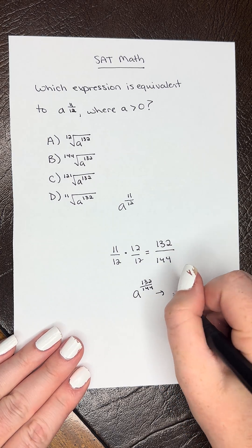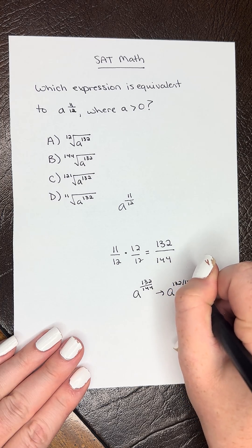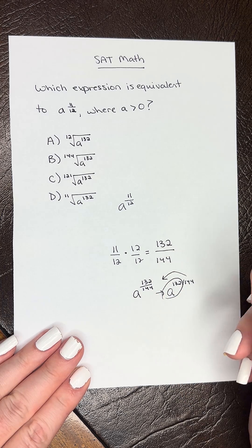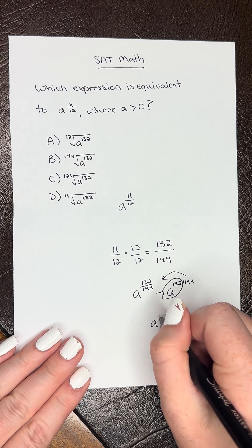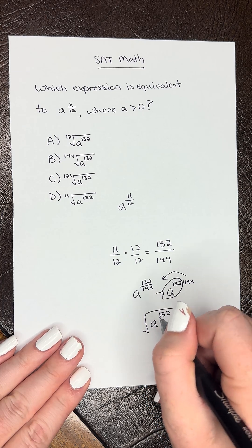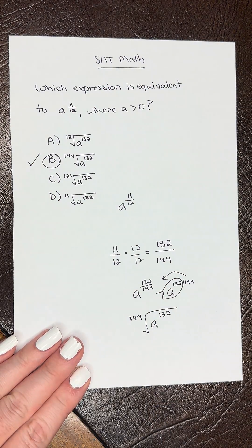So the way I like to think about this is we rewrite it sideways. And whenever it's touching the base stays, whatever is not goes. So we would rewrite this as a raised to the 132. And then we would have our radical and 144 would be on the outside. And our answer would be B.